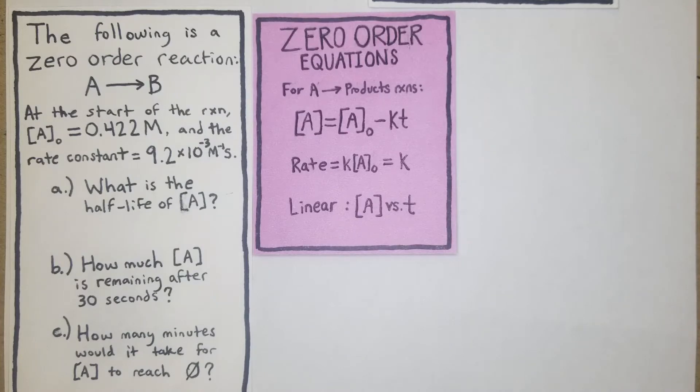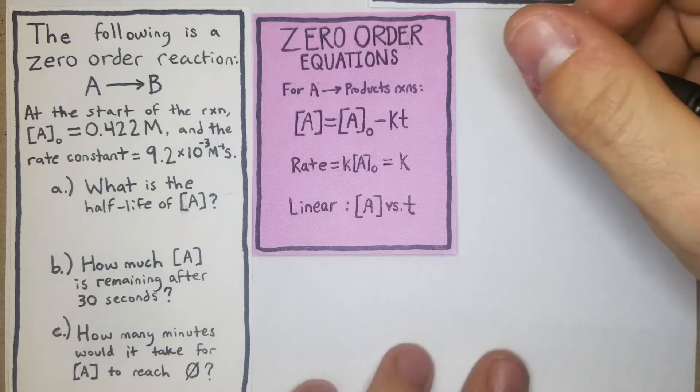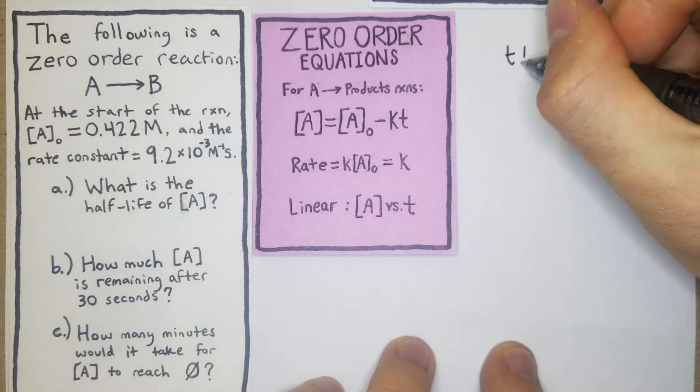At the start of the reaction, the [A]₀ is going to be 0.422 molar and the rate constant is going to be 9.2 × 10⁻³ M⁻¹s⁻¹. So first off we're just calculating what is the half-life of A. So we're going to use that formula we had up here but I'll rewrite it: t₁/₂